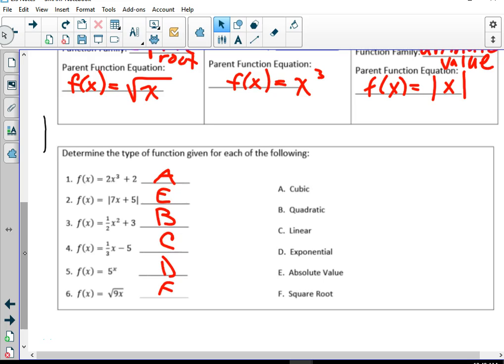So 1 is A, and it's A because of x to the 3 right here. You might want to circle that 3. 2 is E, absolute value, and you might want to draw arrows to the absolute value lines. 3 is B, quadratic, because it's squared. You might want to circle that. 4 is C, linear, because it's x to the 1. We don't write the 1, but you might want to write the 1 now as a reminder. 5 is D, exponential, because the variable is in the exponent spot. And 6 is square root F, because, well, it's the square root symbol.